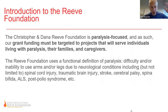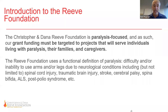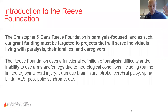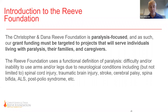By 1999, the APA became the Christopher Reeve Foundation, and Dana's name was added after her untimely passing in 2006. The foundation is paralysis focused — grant funding must be targeted to projects serving individuals living with paralysis as well as their families and caregivers. We use a functional definition of paralysis: difficulty and/or inability to use arms or legs due to neurological conditions, including but not limited to spinal cord injury, traumatic brain injury, stroke, cerebral palsy, spina bifida, ALS, post-polio syndrome, and others.